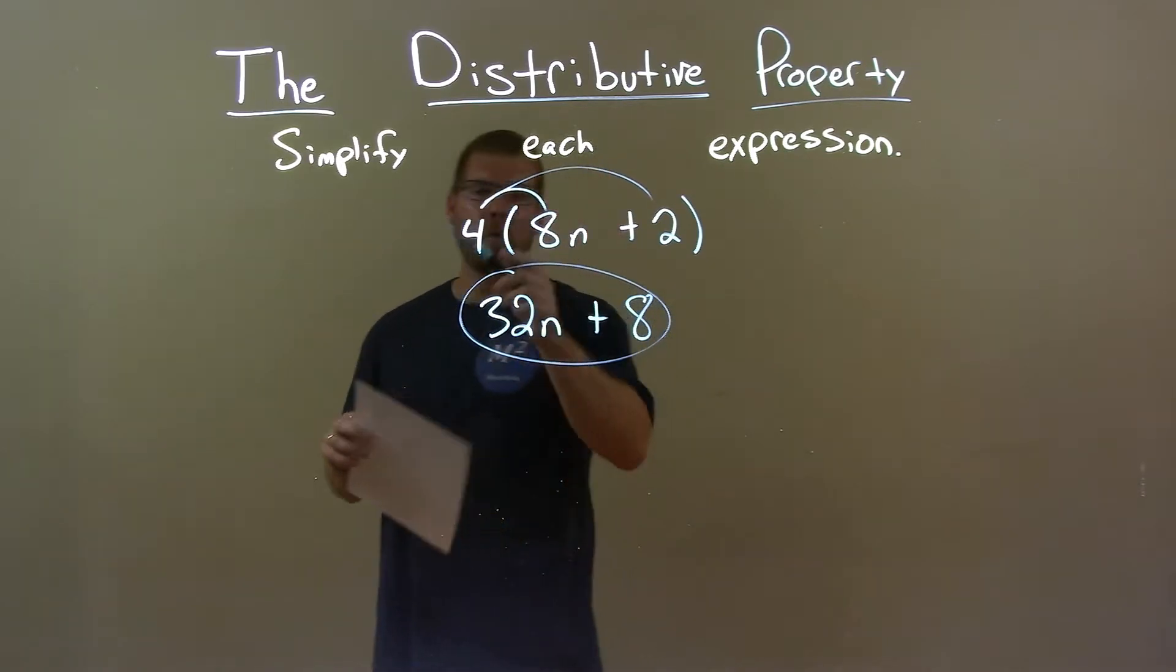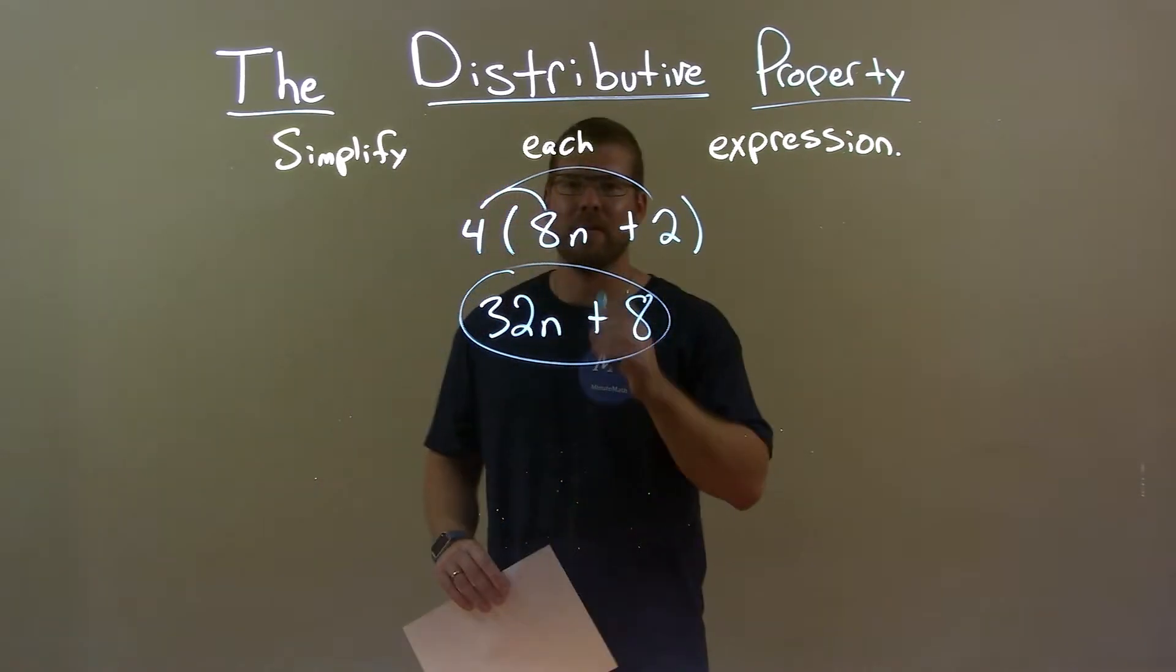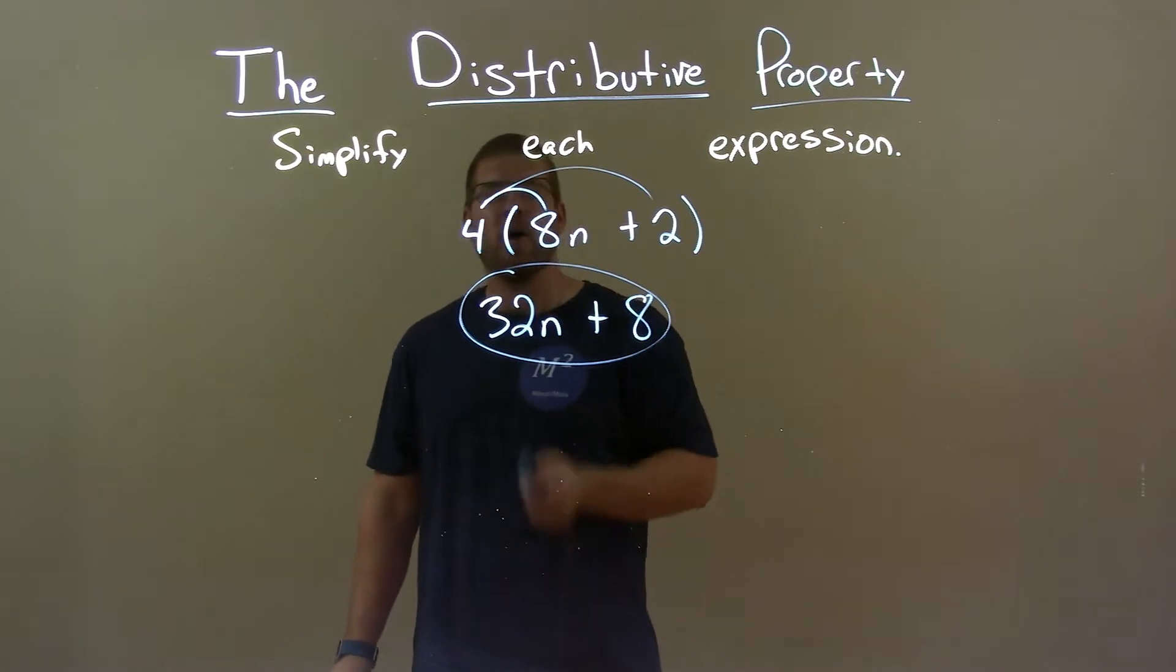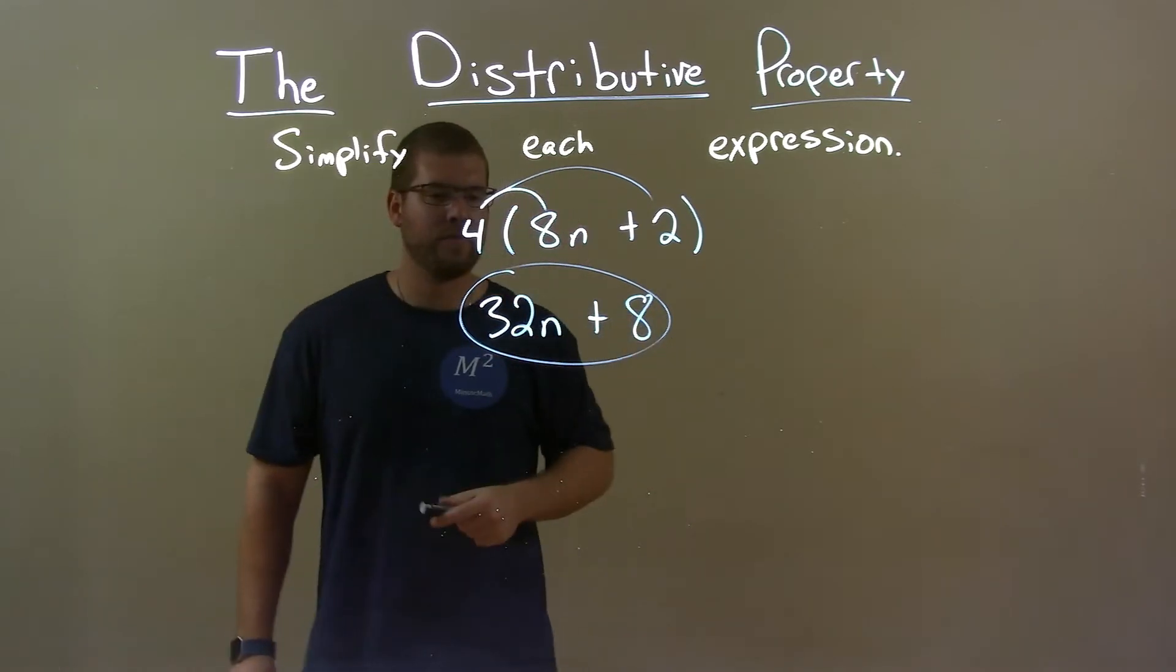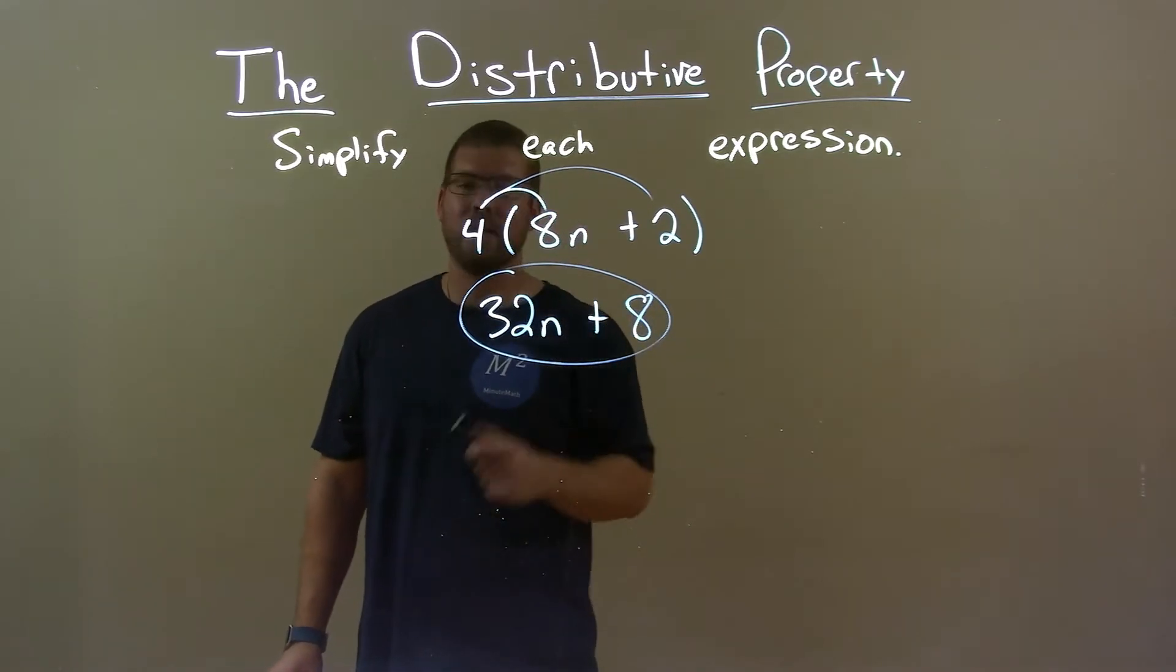Quick recap, we're given 4 times 8n plus 2, and we got to simplify that. Well, I distribute the 4 to both parts, and that was it. It's a quick one or two steps, technically. And my final answer is 32n plus 8.